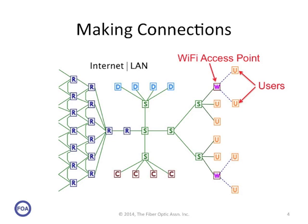Today, many users use WiFi to connect their devices. Those users connect through a wireless access point — the W on the diagram — with connections shown as dashed green lines because they're radio connections, not cables. Users also connect with wired connections, the green lines, which are generally unshielded twisted pair copper cables or fiber optics.